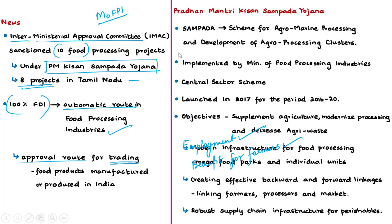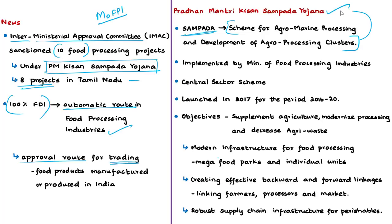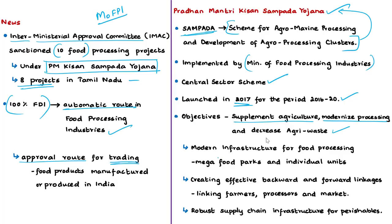The Pradhan Mantri Kisan Sampada Yojana was initially known as SAMPADA — Scheme for Agro Marine Processing and Development of Agro Processing Clusters. It is implemented by the Ministry of Food Processing Industries as a central sector scheme, launched in 2017 for 2016–2020. The scheme is a comprehensive package aimed at creating modern infrastructure with efficient supply chain management from farm gate to retail outlet. Its objectives are to supplement agriculture, modernize processing, and decrease agri-waste.